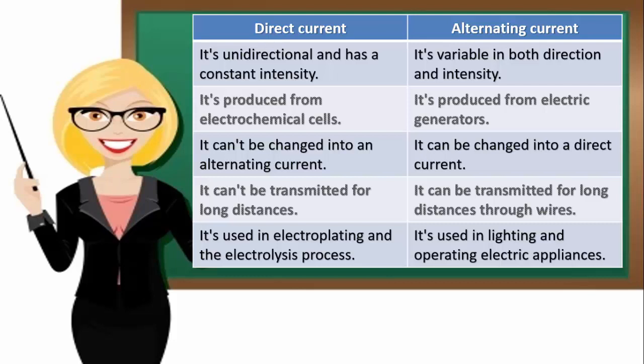Uses: direct electric current is used in electroplating, electrolysis process, and operating of some electric machines. Alternating electric current is used in lighting houses and operating electric appliances.